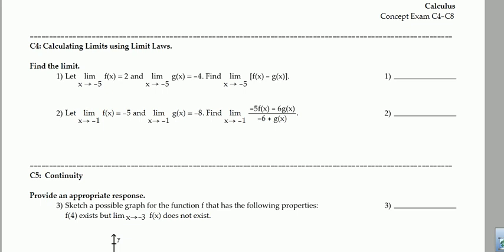In problem number 1, we're told that the limit as x approaches negative 5 of f of x is 2, the limit as x approaches negative 5 of g of x is negative 4, and we're asked to find the limit as x approaches negative 5 of f of x minus g of x.